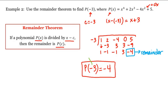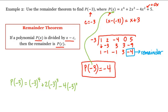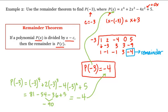We can check our answer by plugging negative 3 into our polynomial. p of negative 3 equals negative 3 to the fourth power plus 2 times negative 3 cubed minus 4 times negative 3 squared plus 5, which equals 81 minus 54 minus 36 plus 5. Since negative 54 minus 36 is negative 90, we have 81 minus 90 plus 5, which is negative 9 plus 5, which sure enough equals negative 4. And this is how we work with the remainder theorem. Thank you and we'll see you next time.